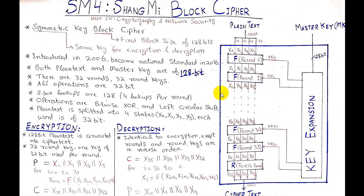SM4 block cipher is a block cipher mostly used in cryptography and network security. It is known as a symmetric key block cipher - symmetric key means the same key will be used for encryption and decryption, and in fact the same round function will be used for both without any alteration. Block cipher means we have an input of 128 bits; if we have a larger input we divide it into multiple blocks of 128 bits and generate a corresponding cipher text of 128 bits.